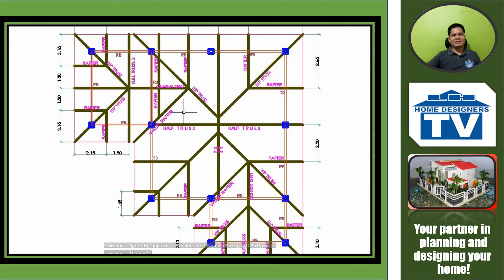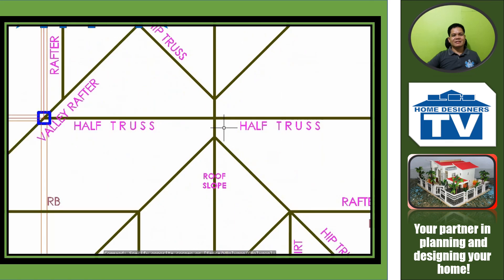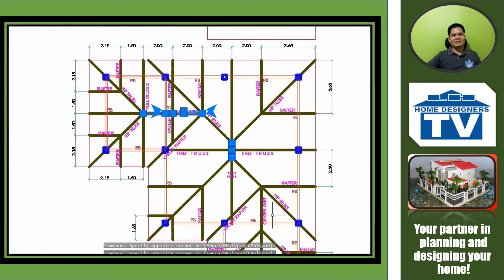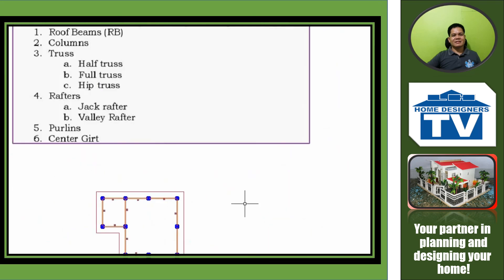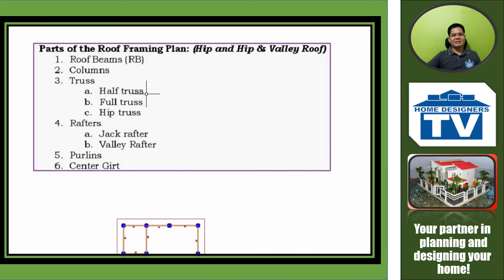The last part of our roof framing plan is the center girds. This is one, this is the second, and this is the third. Once again, these are the six parts of the roof framing plan when we use the hip and hip-and-valley roof.